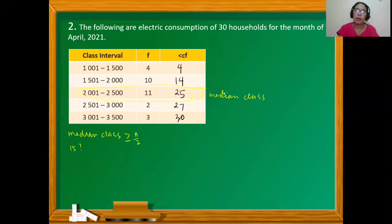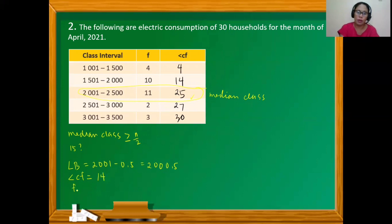The lower boundary of the median class equals 2001 minus 0.5 = 2000.5. The less-than cf above the median class is 14. The frequency of the median class is 11. The class size equals upper limit minus lower limit plus 1: 3500 minus 3001 plus 1 = 500.